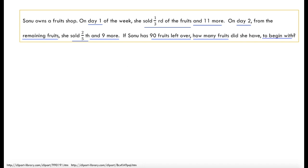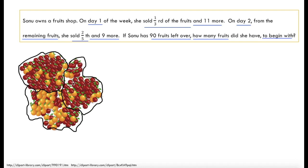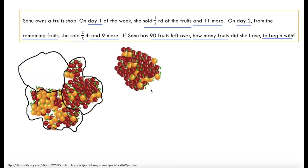Let's start working with the problem. She sold one third of the fruits. Let's represent all the fruits Sonu has using a diagram. If she sold one third, it means the fruits are divided into three equal parts. She sold one part out of three — that is the one third we are talking about. So on day 1, if we divide the fruits into three equal parts, she sold one out of the three parts.